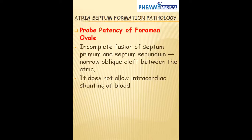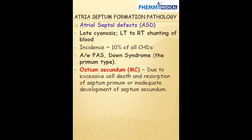The next one is probe patency of foramen ovale. This means incomplete fusion of the septum primum and septum secundum, thereby forming a narrow oblique cleft within the atrium. It does not allow intracardiac shunting of blood, which is a good thing about it.